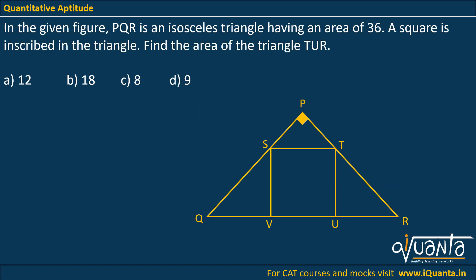The question is: in the given figure, PQR is an isosceles triangle having an area of 36. A square is inscribed in the triangle. Find the area of triangle TUR.